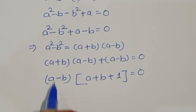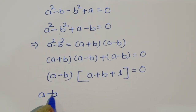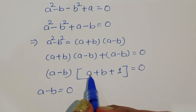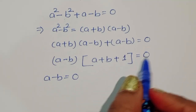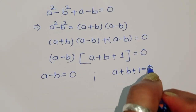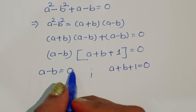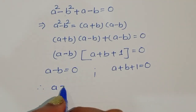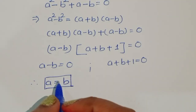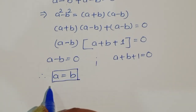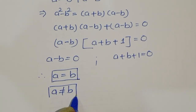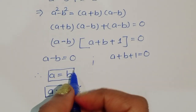This gives us two cases: a - b = 0, or a + b + 1 = 0. From the first case, a - b = 0 means a = b. However, the given condition states that a is not equal to b, so this case is rejected.